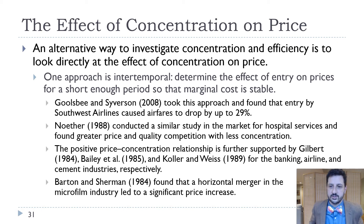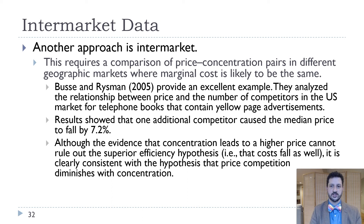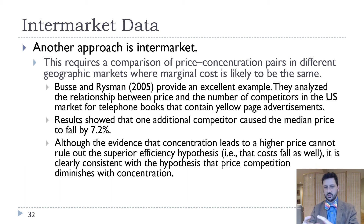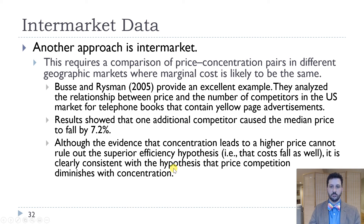That does support the idea that prices tend to go up when competition goes down. Looking at intermarket data, we can compare price-concentration pairs in different geographic markets where marginal cost is likely to be the same — essentially looking at how many firms compete in different areas. Buss and Reisman found that one additional competitor caused the median price to fall by 7.2%, providing more evidence that greater concentration leads to higher prices.